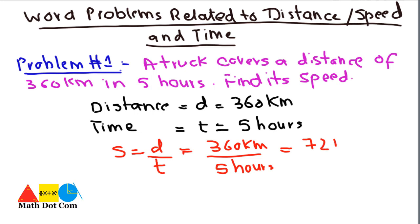So what we get is 72 kilometers per hour. If we want to get this speed in meters per second, we can do that by converting kilometers to meters. We replace kilo with thousand: 360 × 1000 = 360,000 meters.